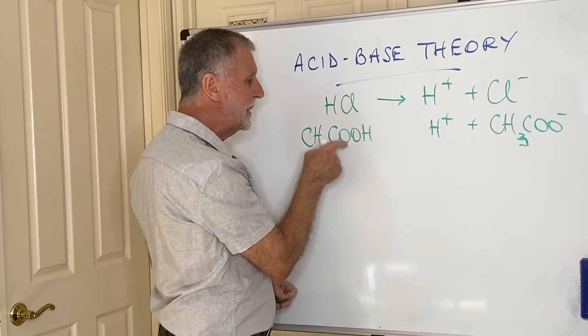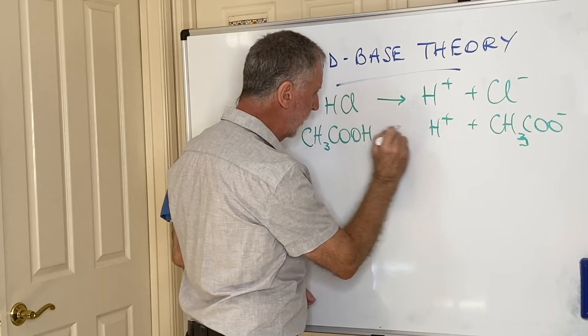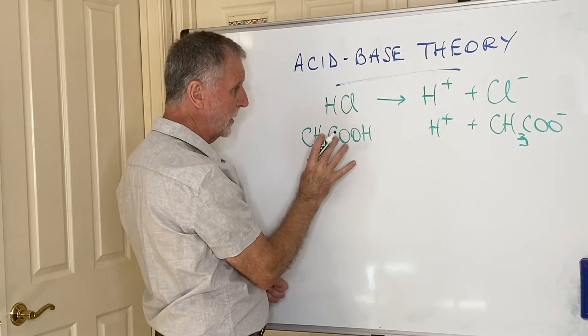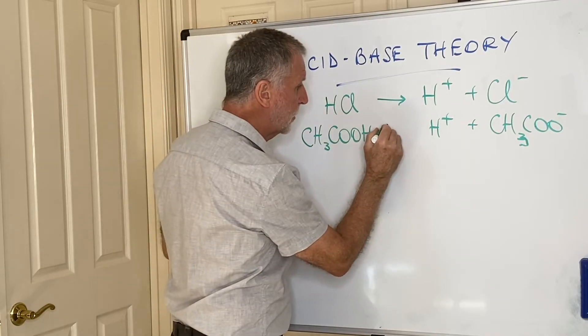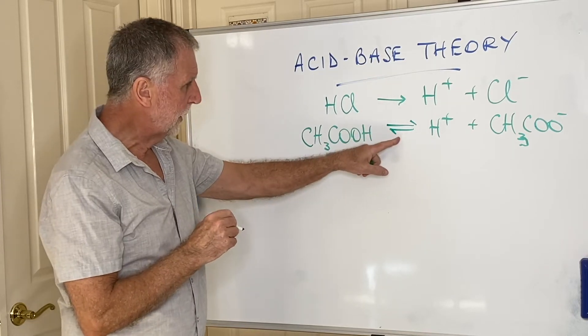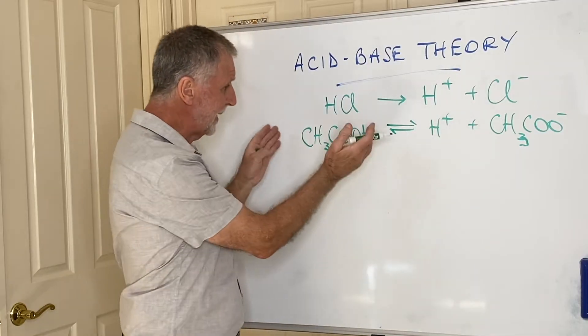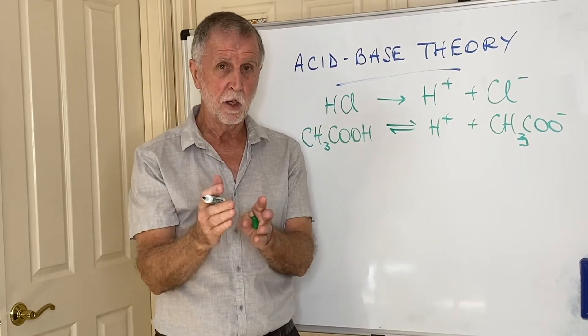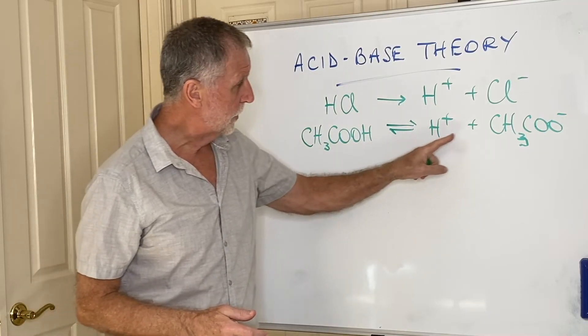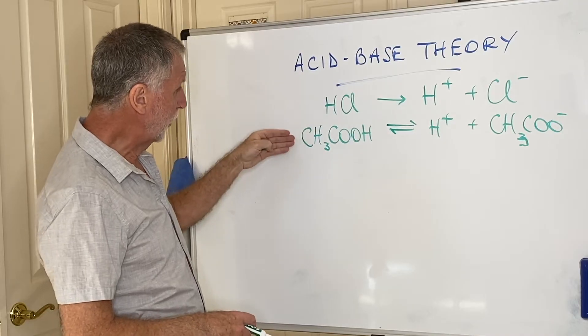Ethanoic acid is a weak acid. Therefore, I'm not going to put an arrow pointing one way only. To be honest with you, the back reaction dominates this particular system. So this time we put a reversible arrow. And that reversible arrow means it could lie on one side or the other. The reality is it lies heavily on the left-hand side. Very, very few of those molecules dissociate into their ions. So there we have a strong acid and a weak acid.